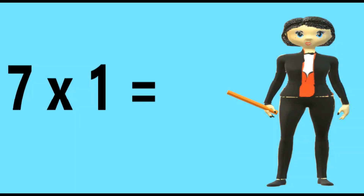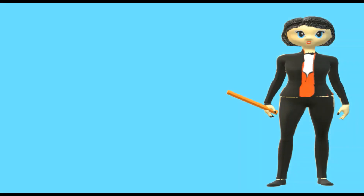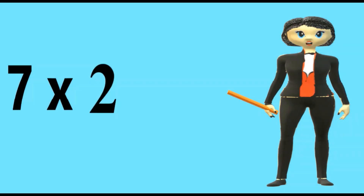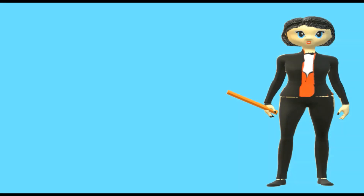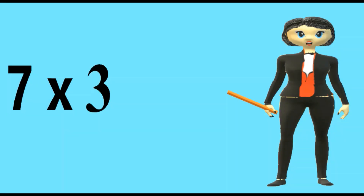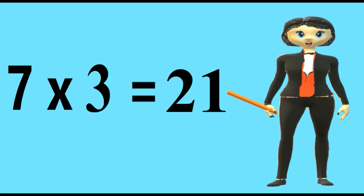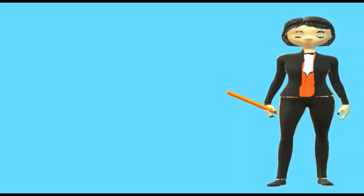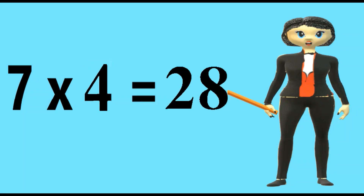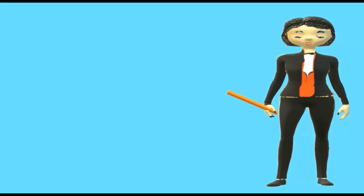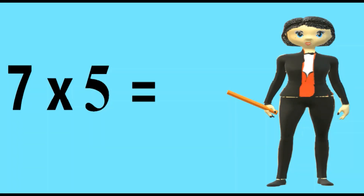7 1's are 7. 7 2's are 14. 7 3's are 21. 7 4's are 28. 7 5's are 35.